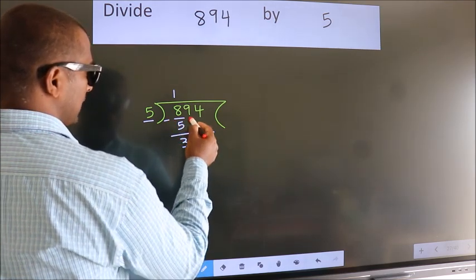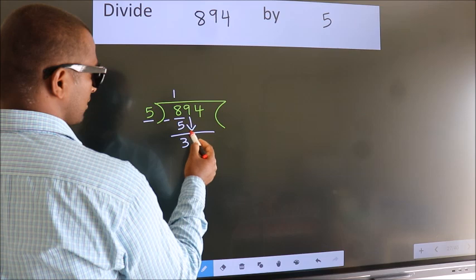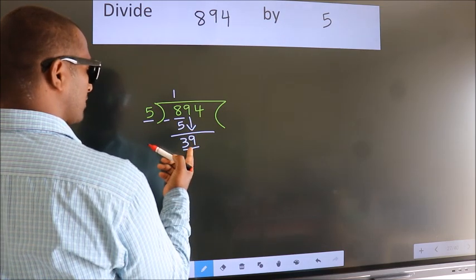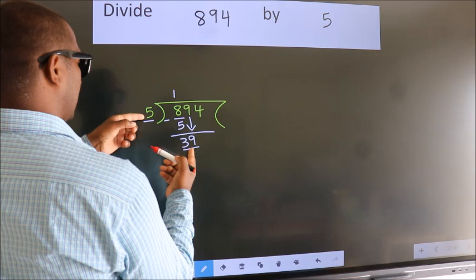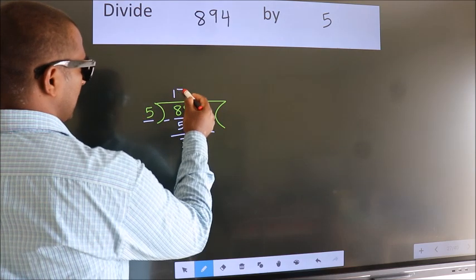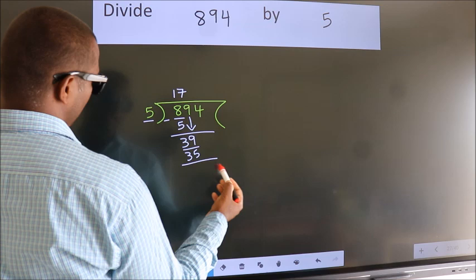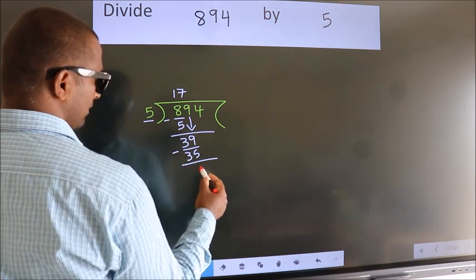After this, bring down the beside number. So, 9 down. So, 39. A number close to 39 in 5 table is 5 sevens 35. Now, we subtract. We get 4.